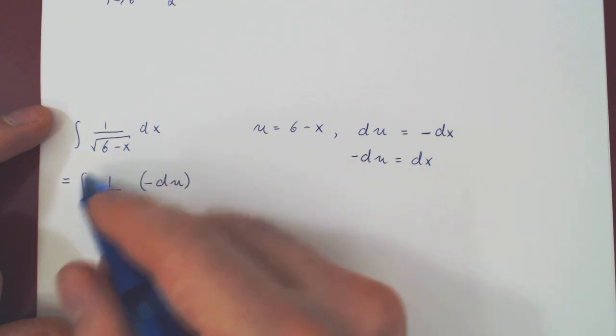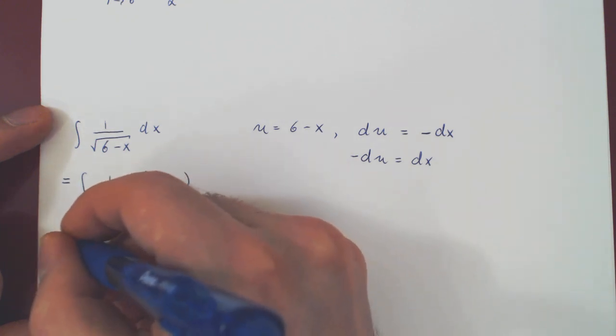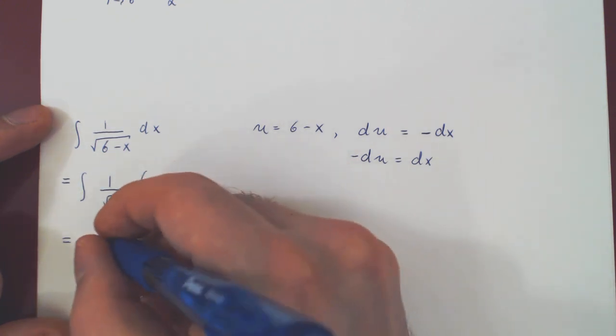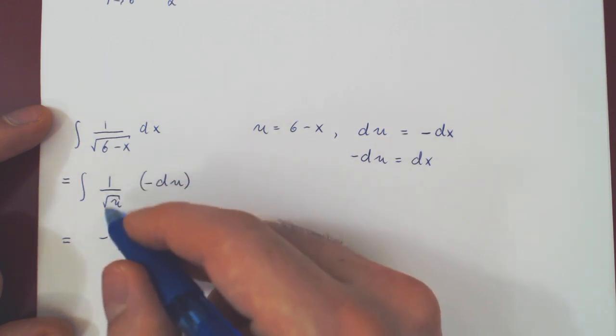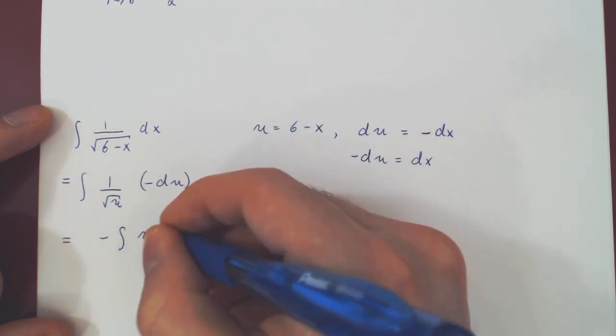And now we can find this easily with the power rule. Pull the negative up front, rewrite 1 over root of u as u to the minus 1 half.